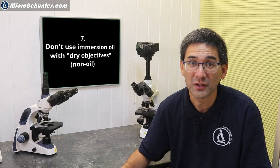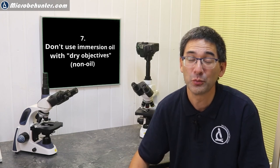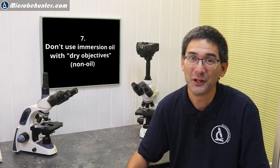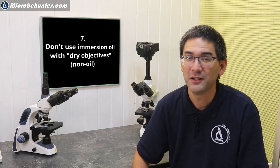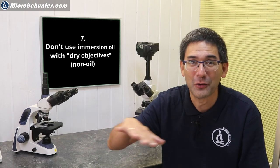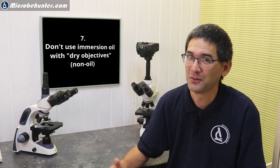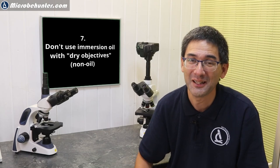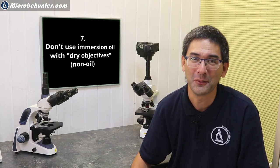Once you've used oil on the 100x oil immersion objective, don't rotate the 40x objective back into position—you might get it covered with oil and won't see anything because there's a layer of oil on the specimen slide. Once you've used oil, you have to clean the objective and slide, then start again with low power.